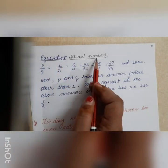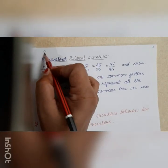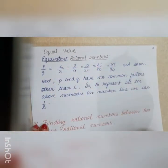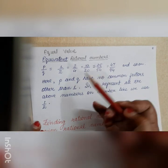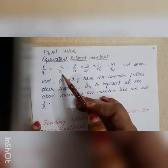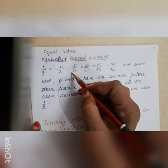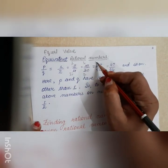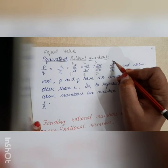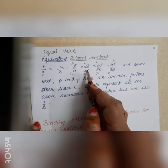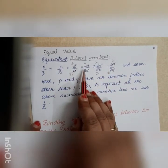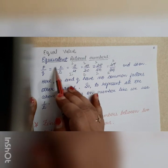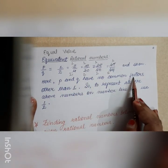Now, equivalent rational numbers — as the word says, these are rational numbers which have equal value. For example, 1/2 can be written as 2/4, 10/20, 25/50, 47/94 — they all represent 1/2. So 1/2, 2/4, 10/20, 25/50, and 47/94 are all equivalent rational numbers. When p and q have no common factors other than 1, the fraction is in its lowest form.